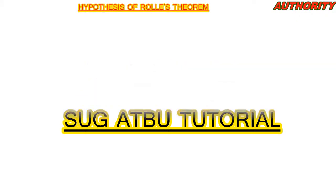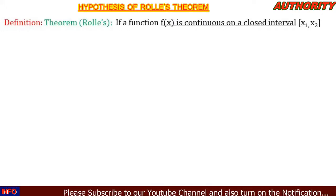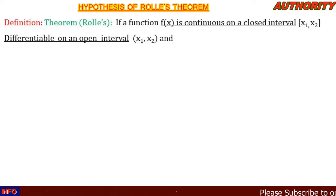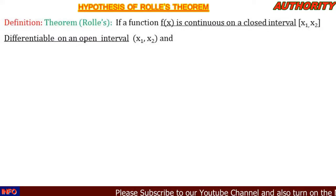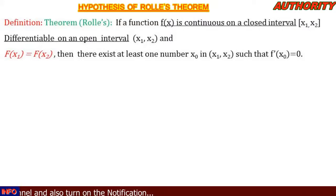Let's consider the hypothesis of Rolle's Theorem. The definition: Rolle's Theorem states that if a function f(x) is continuous on a closed interval [x1, x2], differentiable on an open interval (x1, x2), and f(x1) is equal to f(x2), then there exists at least one number x naught in (x1, x2) such that f prime of x naught is equal to zero.